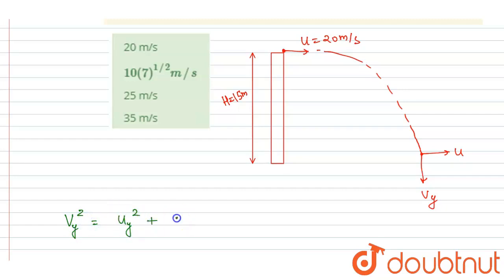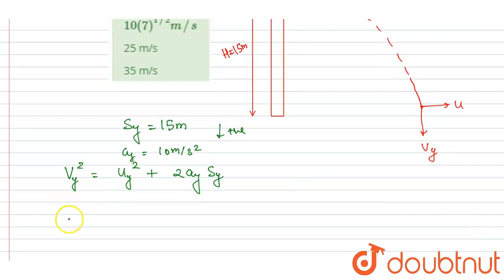So I will write vy squared equals to uy squared plus 2ay sy. So sy, you can see it is 50 meter in downward direction, taking downward as positive, and ay is g, that is 10 meter per second squared.